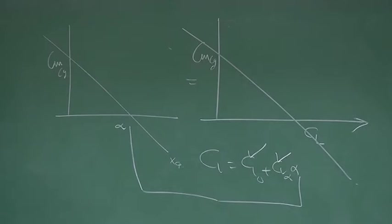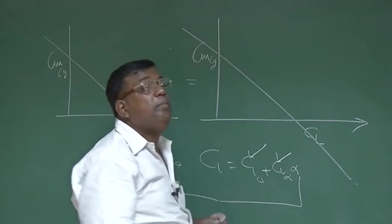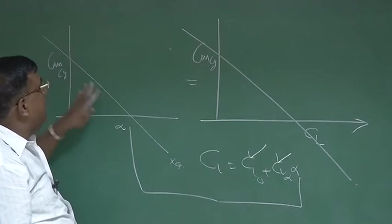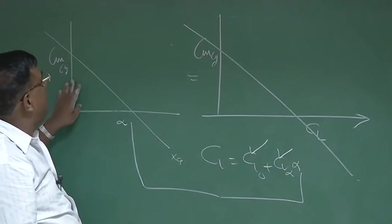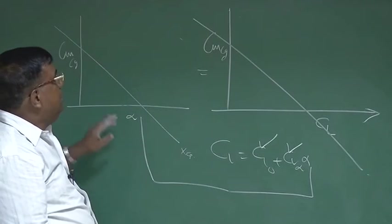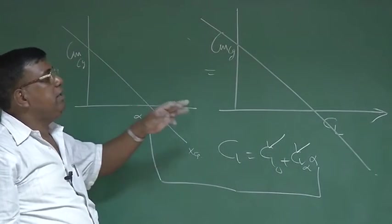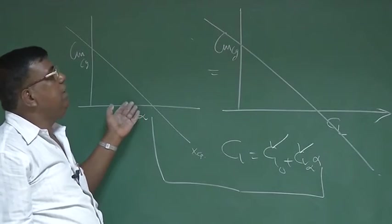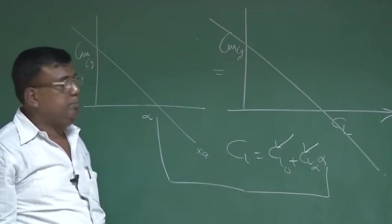Now, if the variation of CM and CL is like this, let us see what is the equilibrium point. Please understand, from the CM versus alpha graph, I am now shifting towards the CM versus CL graph. For each alpha there is a corresponding CL, so I will be replacing alpha by CL. Let us say that is the graph that has come.